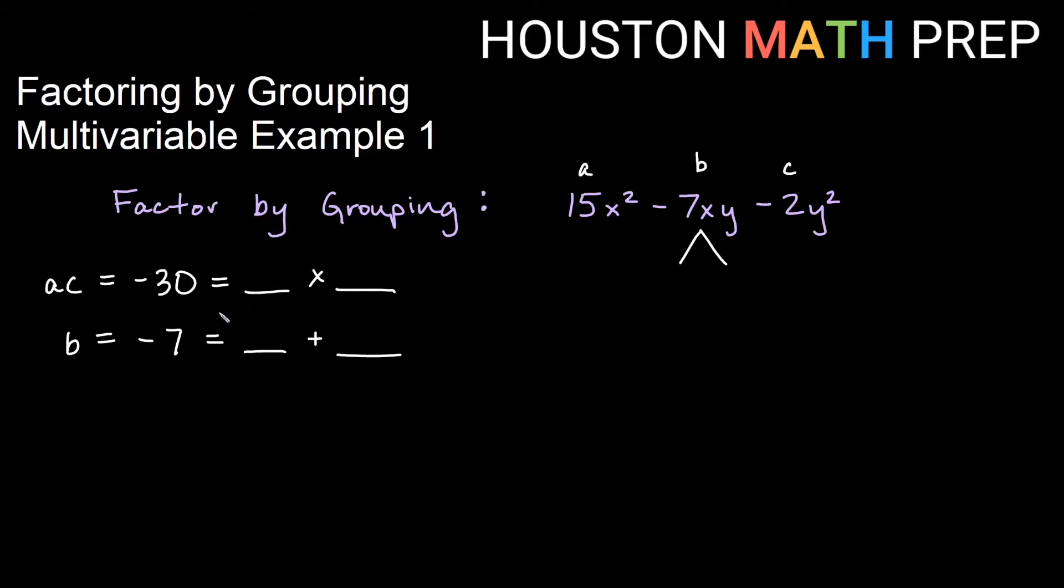If I look here, I can see that they multiply to get a negative, so they must be opposite signs of one another. And because they add to get a negative number, the negative number must be bigger than the positive number. So if we think about it for a while, we might come up with the numbers being negative 10 and positive 3.